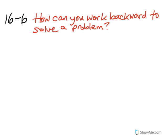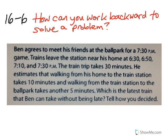Please take a look at the following problem and think about how you can work backward to solve it. Ben agrees to meet his friends at the ballpark for a 7:30pm game. Trains leave the station near his home at 6:30, 6:50, 7:10, and 7:30pm. The train trip takes 30 minutes. He estimates that walking from his home to the train station takes 10 minutes and walking from the train station to the ballpark takes another 5 minutes. Which is the latest train that Ben can take without being late? Tell how you decided.